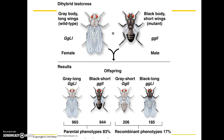In this cross, the doubly heterozygous wild-type phenotype female was crossed with the mutant having a black body and short wings. The results showed that parental phenotypes dominated the offspring proportionally: 83% of the resulting offspring had these parental phenotypes, but recombinant phenotypes comprised 17% of the offspring.